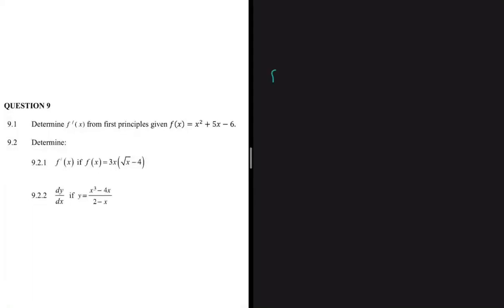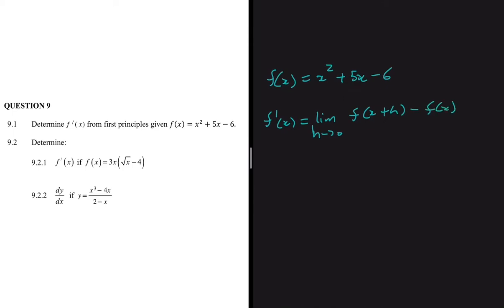Let's see if we can find the derivative of f(x) = x² + 5x - 6 using first principles. The formula we use is: f prime of x equals the limit as h turns into 0 of f(x + h) minus f(x), divided by h.